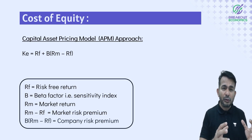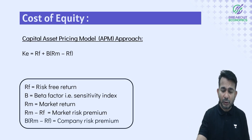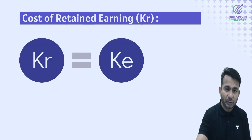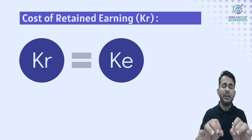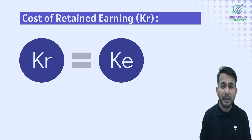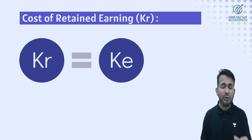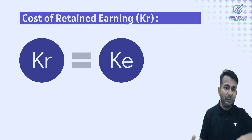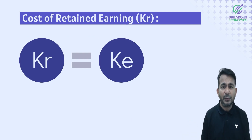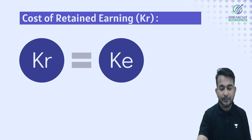Once you have cost of preference, cost of debt, and cost of equity, cost of reserves is very simple to find — because cost of reserves is nothing but cost of equity (KE = KR). It's as simple as that.